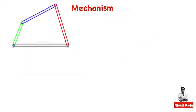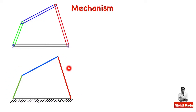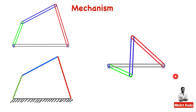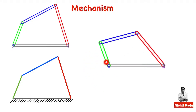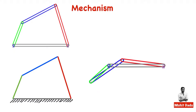This kinematic chain becomes a mechanism when there is at least one fixed link. Here this link is fixed, shown by the end conditions. The animation of this mechanism shows one link fixed; giving input motion to one link produces definite motion in the other links. This is called a four-bar mechanism, as it is made up of four links. Now we will study the mobility or degree of freedom of mechanisms.